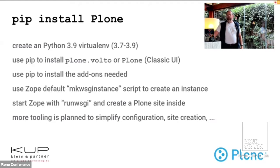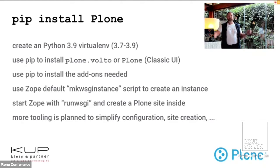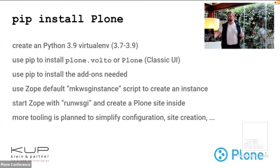In practice, you can do `pip install plone` or `pip install plone.volto` inside a virtual environment — standard tooling, no need to invent anything. You can pip-install add-ons, then use tooling like mkwsgi and similar scripts to create an instance and run the site with WSGI. We will probably provide more tooling to make this easier, but it's a work in progress.